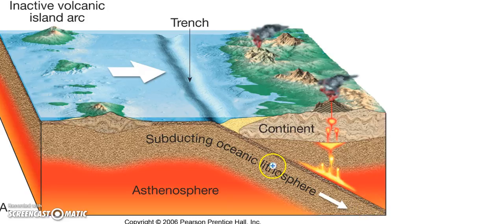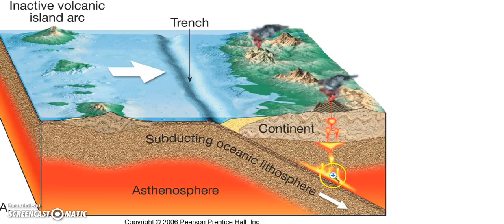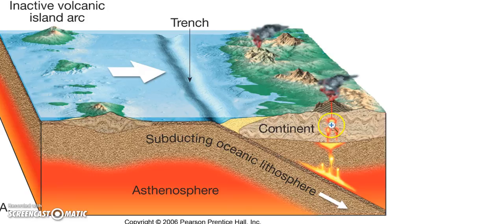The volcanoes are caused by materials being carried down into the Earth and then melting. The melting results in magma. The magma is less dense than the rocks around it, so it rises up. It'll pool in different little magma chambers and then find its way to the surface where it erupts, so you'll definitely have some volcanoes here.